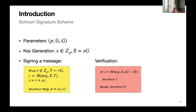Verification works as follows. Given the message and signature, the verifier checks whether the hash of the message, the public key, and S·G − C·X is equal to C. If the signature is correctly constructed, then S·G − C·X should equal T.